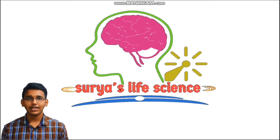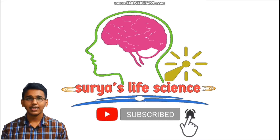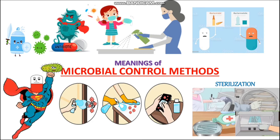Welcome to our channel. If you have not yet subscribed, please subscribe and click the bell button to get notified about latest videos. Today in this video lecture we are going to discuss about the meanings of microbial control methods — for example, sterilization, disinfection, decontamination, antibiotic, antiseptic, sanitation, etc. Many people confuse these terms, thinking they all have the same meaning, but the exact meanings of these terms are entirely different. We'll be explaining each and every term so that you can have a better knowledge, so don't skip this video — watch it till the end.